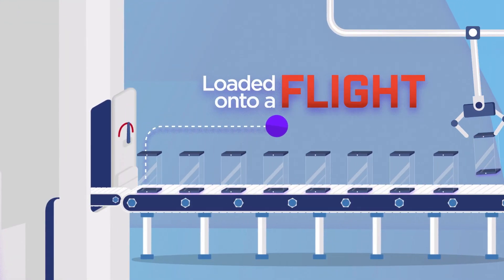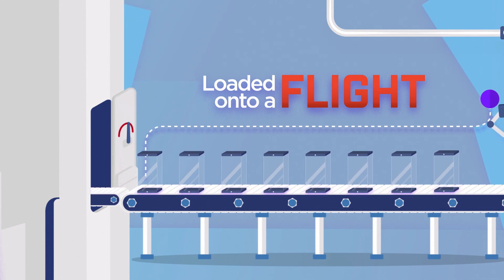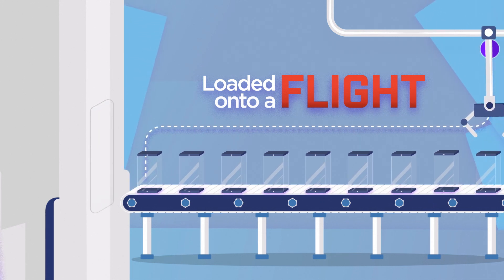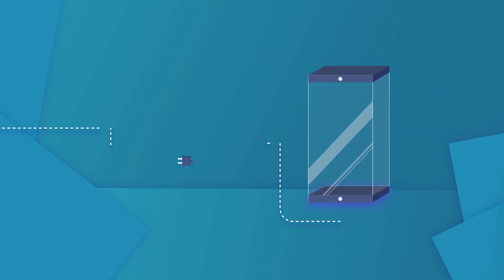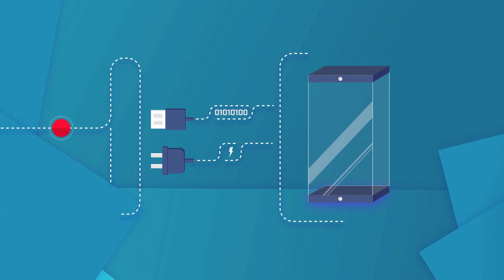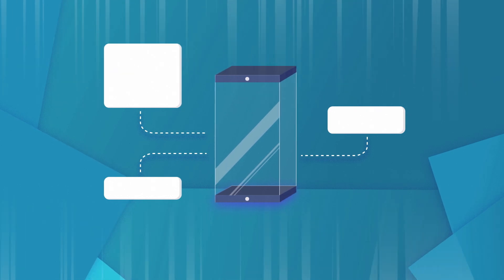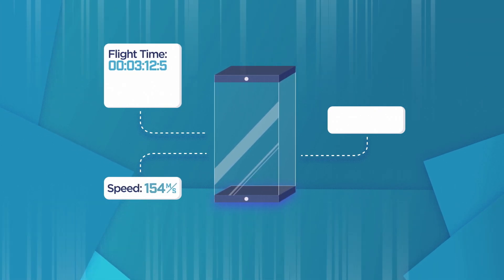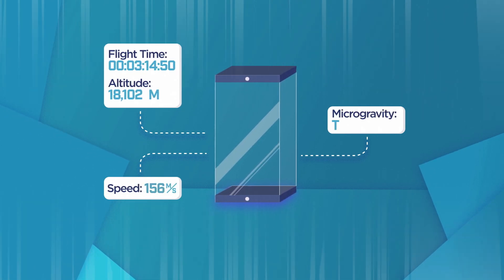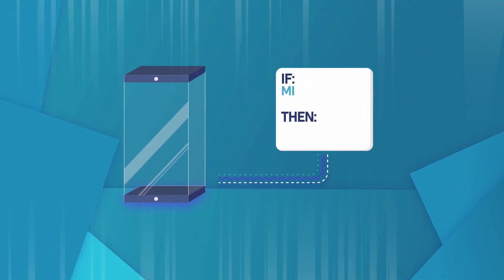It's important to remember that your experiment will be loaded onto a flight, and will be going on its NASA trip without you. So it needs to be tough and smart. It will be plugged into the balloon or rocket for power, and plugged in for data. During your flight, your experiment will get little messages so that it knows what's going on — like how fast it's going, or how high it is, or when microgravity starts. And you can use that data to program your experiment so it knows what to do when.